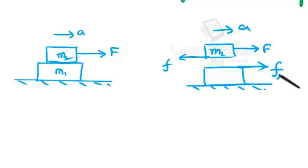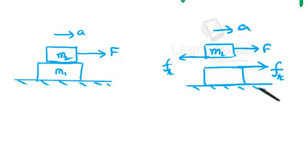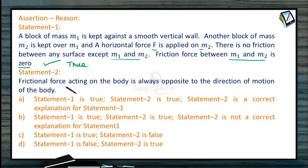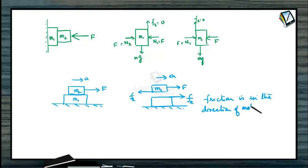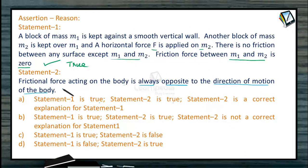For m1, if the surface below is smooth, no horizontal force acts from below. The friction from m2 acts on m1 in the direction of motion of m1. So the friction force on m1 is in the same direction as the motion of that body - not opposite. This contradicts Statement 2.